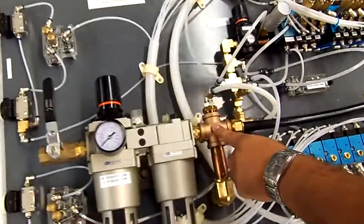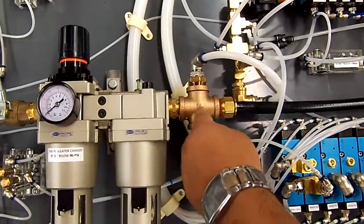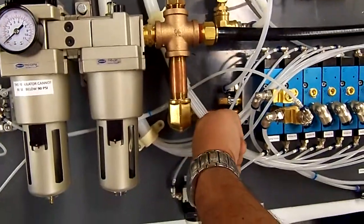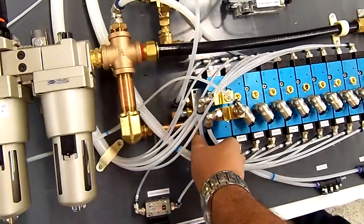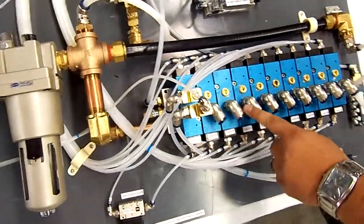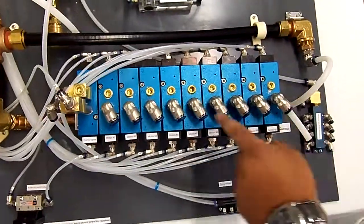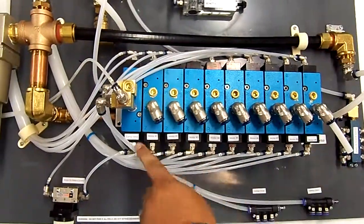It then comes into this junction where we continue to supply air into this manifold. This particular line, which is line 5, is controlling all the air flow for these air motors.